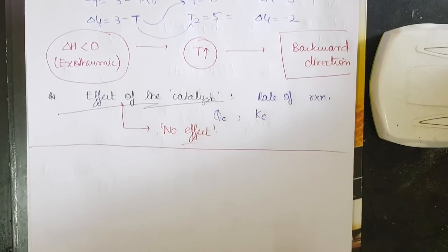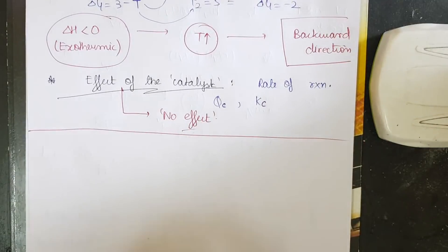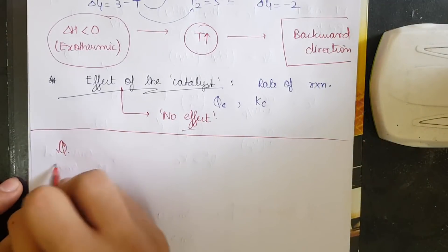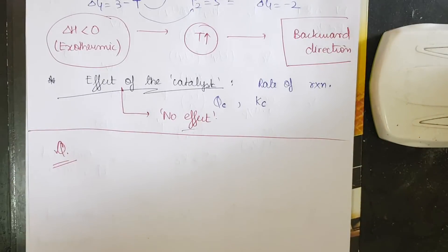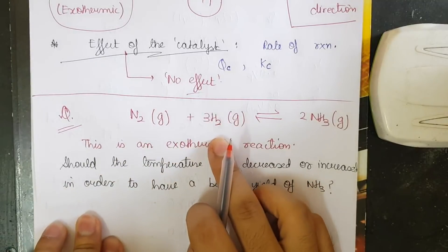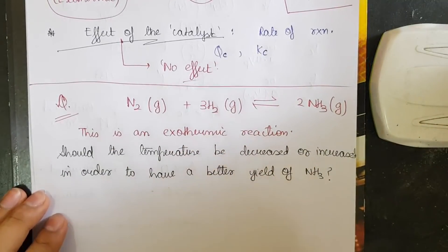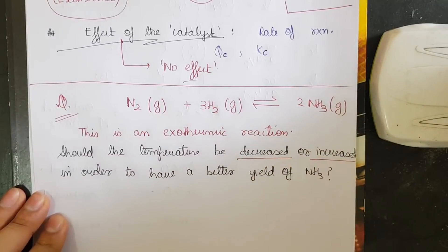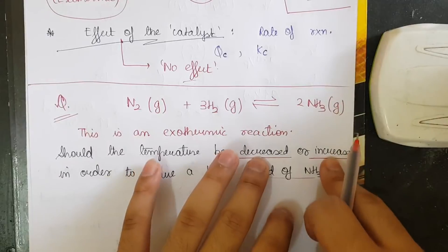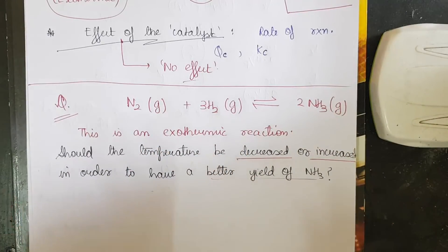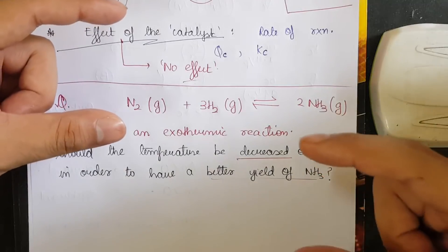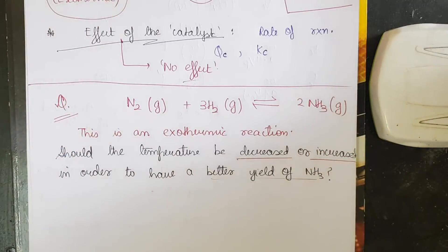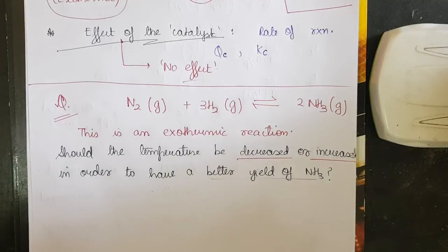Homework question: N₂(g) + 3H₂(g) → 2NH₃(g) is an exothermic reaction. Should the temperature be decreased or increased to get a better yield of NH₃? Mention your answer and any doubts in the comment section. Please check out the ionic equilibrium and chemical thermodynamics playlists on the channel. Thank you and all the best!